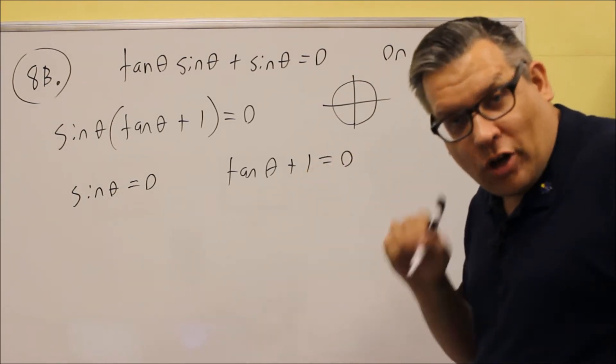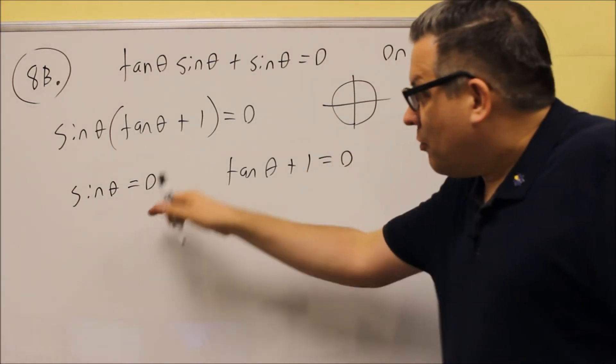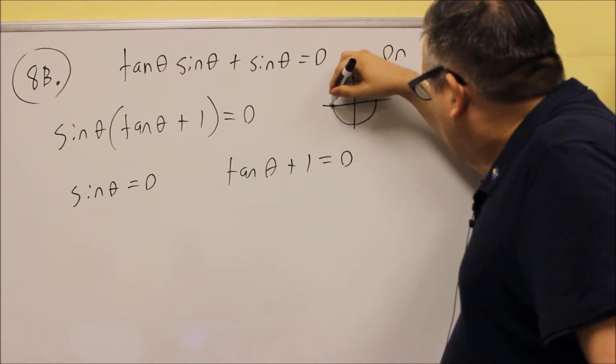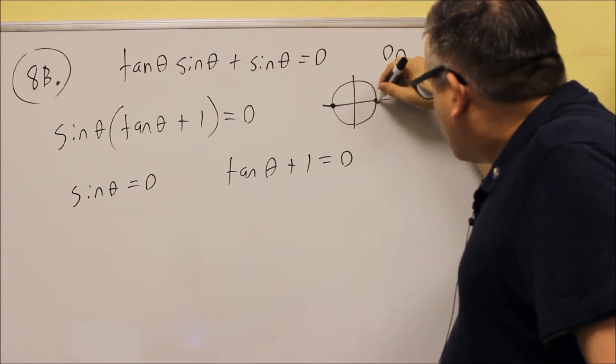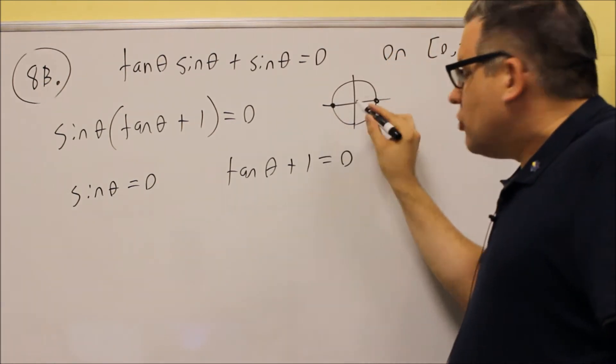you should have the actual unit circle in front of you when you do these problems. But, for sine equals 0, that's where the y value equals 0 in the unit circle, that's going to happen at these two places.